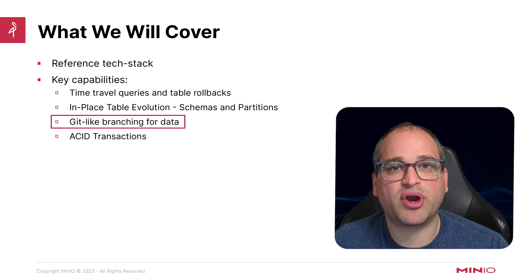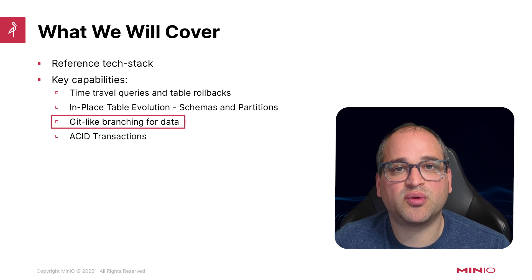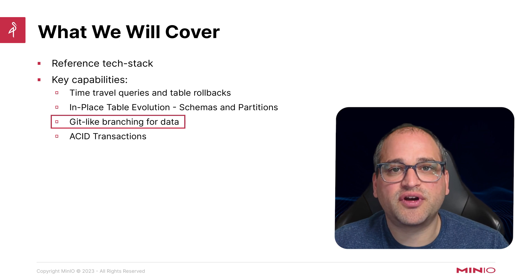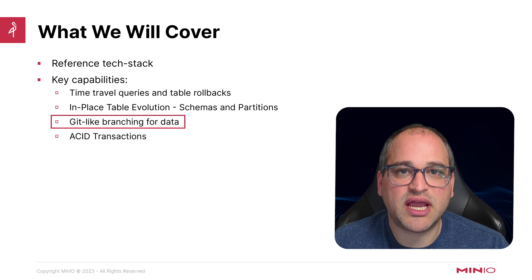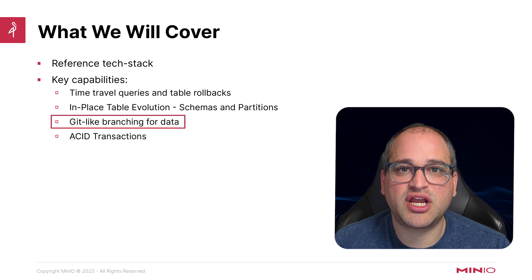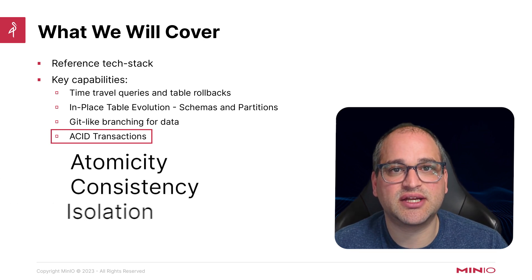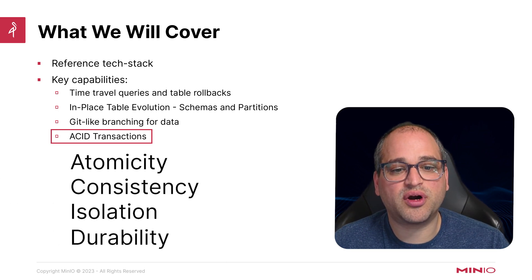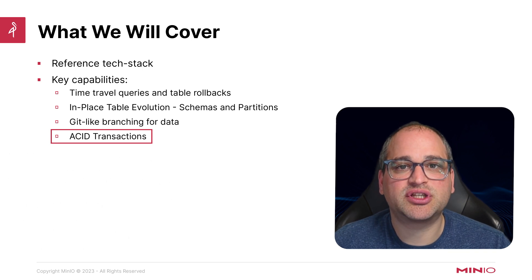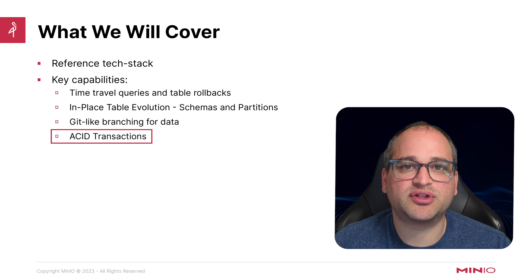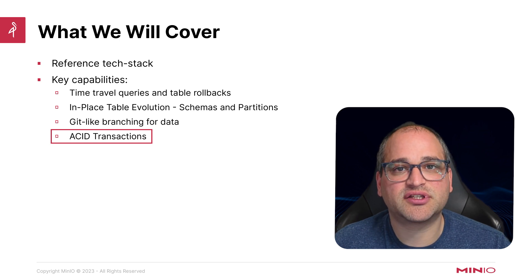We're then going to get into Git-like branching — a pretty exciting capability where data practitioners can modify data (tables, rows, columns, etc.) in a way that's very similar to how software developers modify code. You can take some data as a starting point, create a branch, make a set of changes to that data, and then merge those back into a main or master branch. Finally, we're going to touch on ACID transactions. ACID stands for Atomicity, Consistency, Isolation, and Durability. Taken together, these four properties allow us to treat a data lake in a way that's similar to how we'd treat a database, giving us great operational efficiencies.